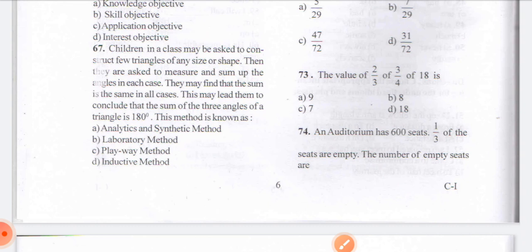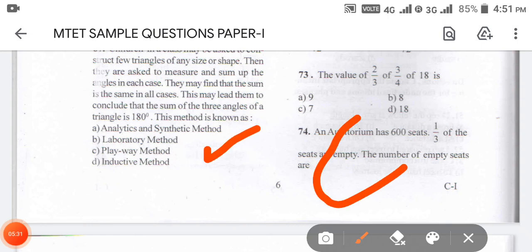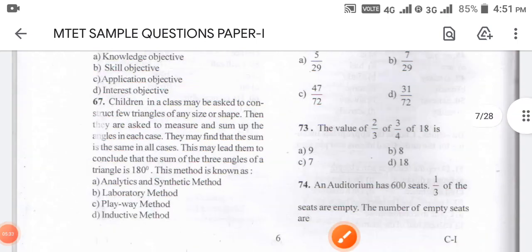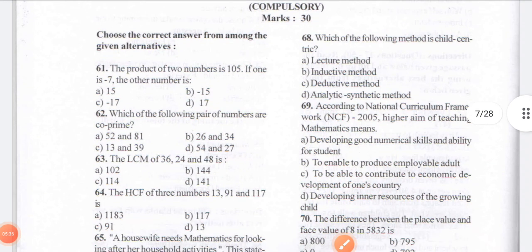The options are analytical method, synthetic method, laboratory method, playway method, or inductive method. The answer for 67 is C — laboratory method. Moving to question number 68: which of the following is a child-centered method — lecture method, inductive method, discussion method, or analytical systematic method?